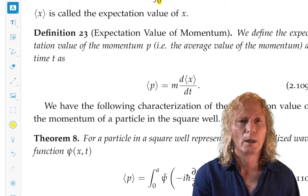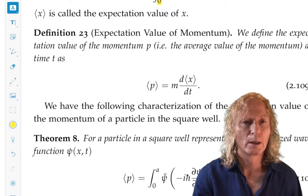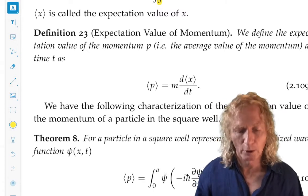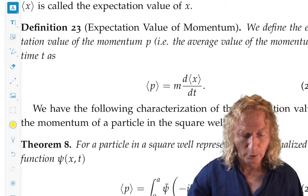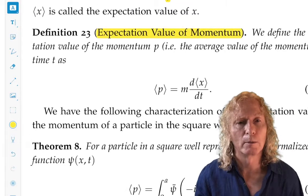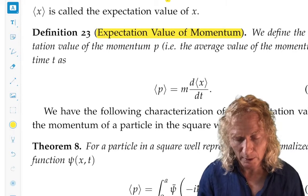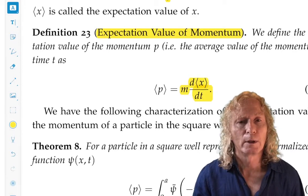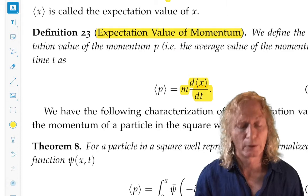Remember our three observables at this point are position, momentum, and total energy. So, let's define the expectation value of momentum to be the mass times the time derivative of the expectation value of x.